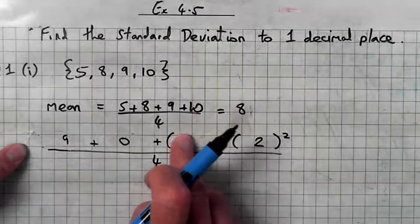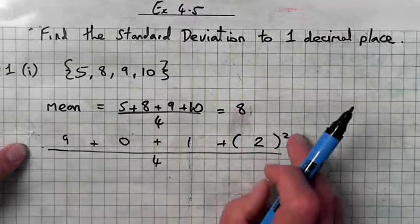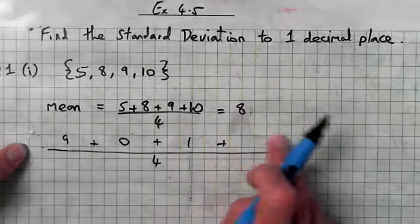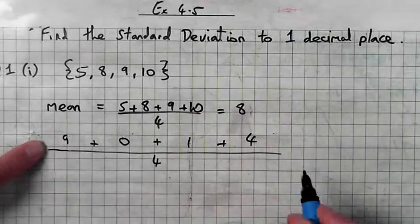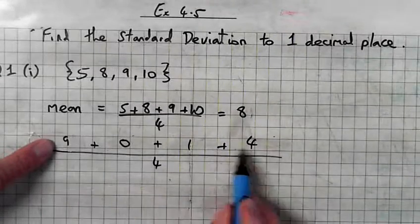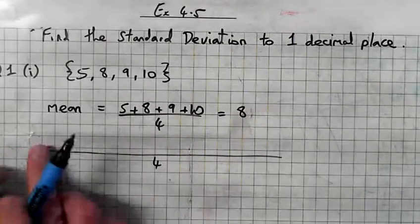1 times 1 is 1, and 2 times 2 is 4. Add them all up: 9 and 1 is 10, and 4 is 14. So 14 over 4.